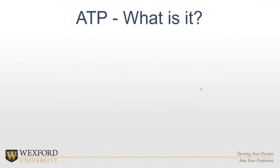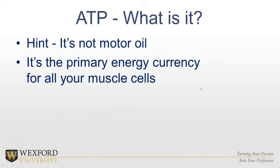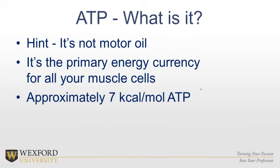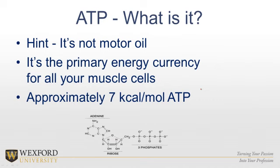So what is ATP? It's the primary energy currency for all your cells — the only one for your muscle cells. There are approximately 7 kcals per mole of ATP. It is a nucleoside triphosphate, so it falls under the category of nucleic acids. We have our nitrogenous base — adenine — our sugar, and instead of just one phosphate, we've got three phosphates.